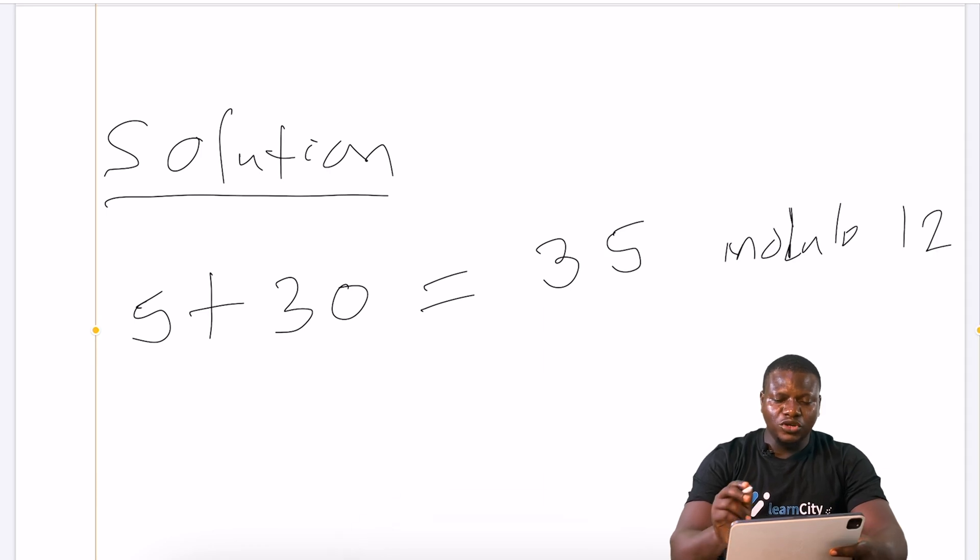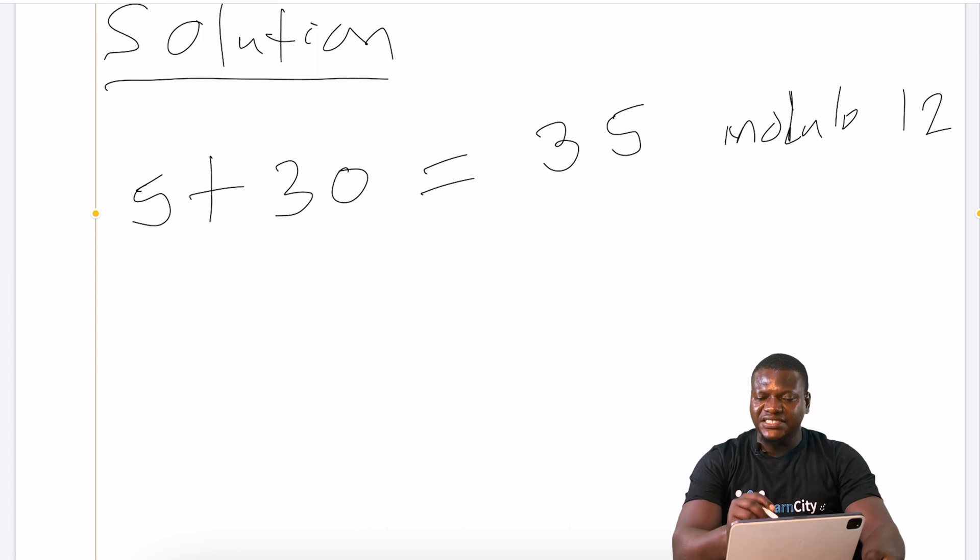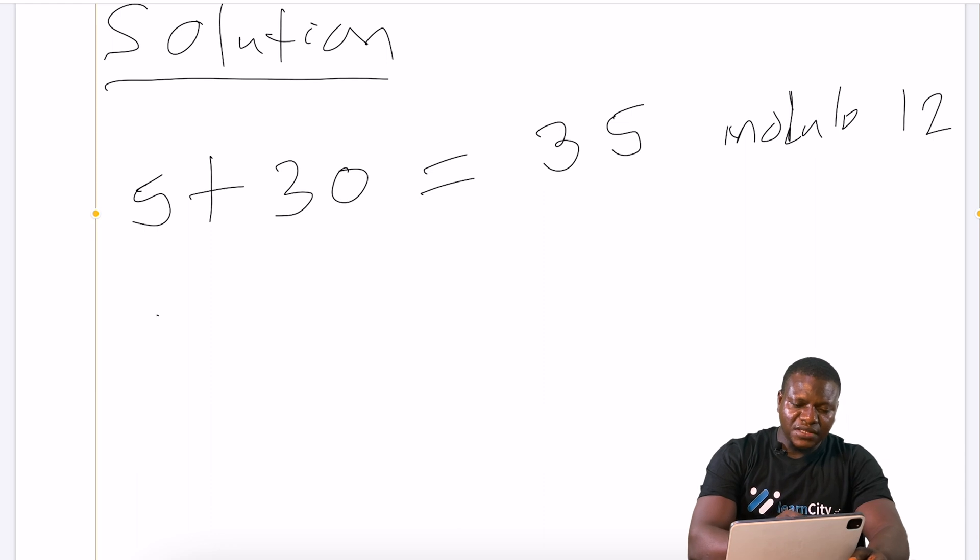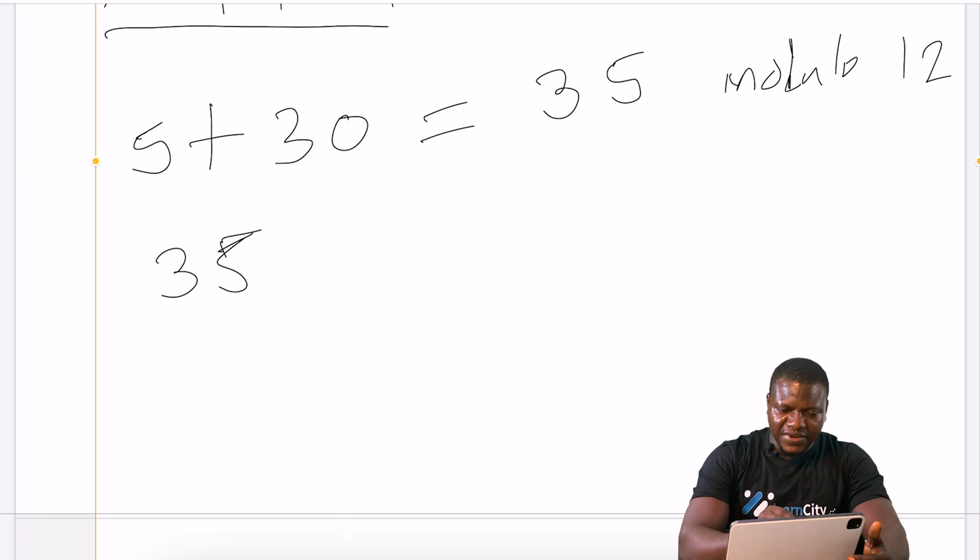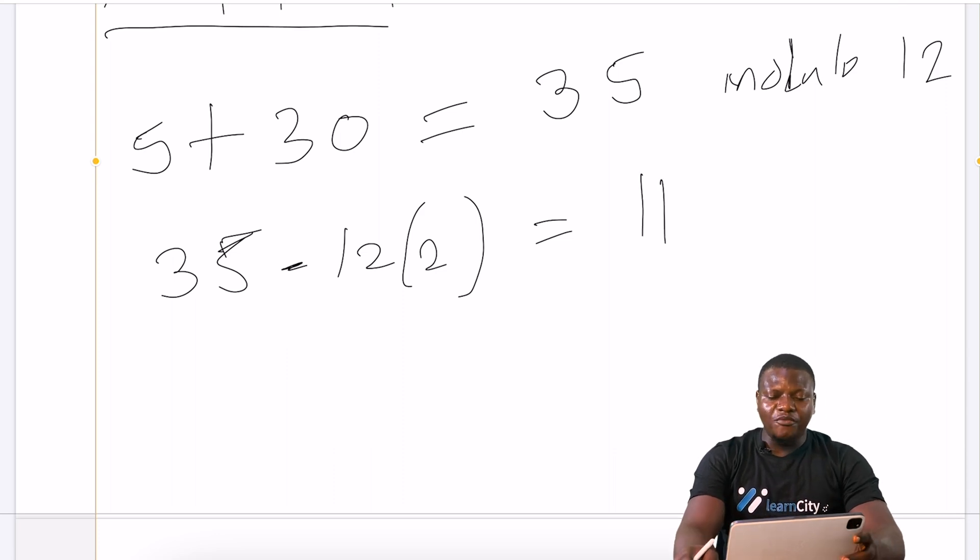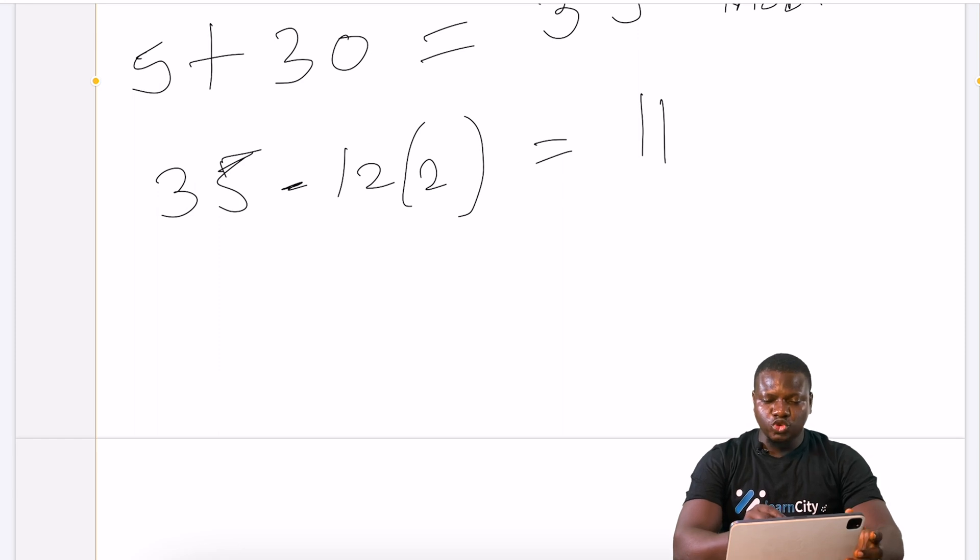This is a modulo of 12. So I'll need to simplify this 35 to the simplest form. How many multiples of 12 will I have in 35? That should give me 35 minus 12 times 2. The number of multiples of 12 that I will have here is 2. 2 times 12 is going to give me 24. If I subtract 24 from 35, that is going to give me 11.